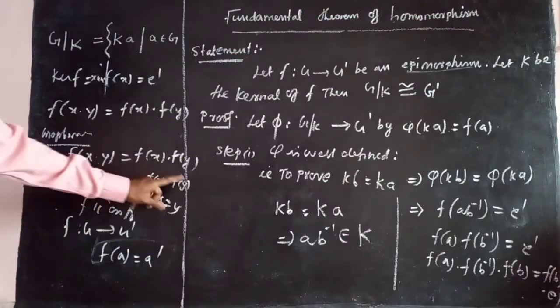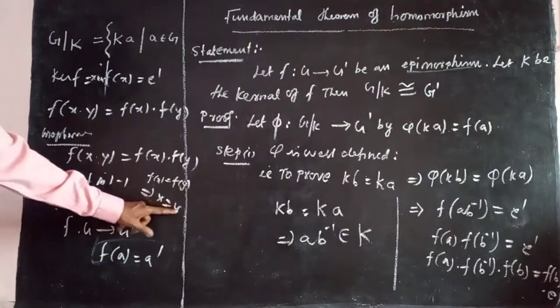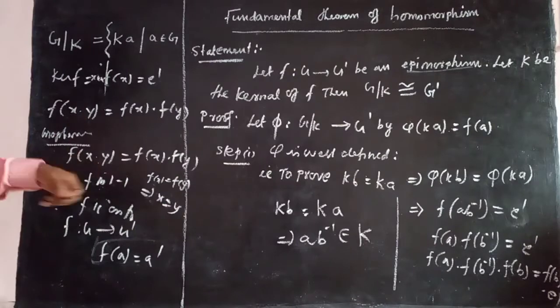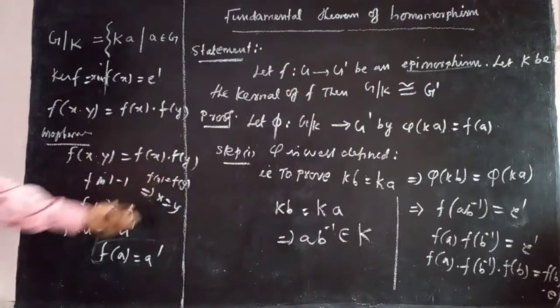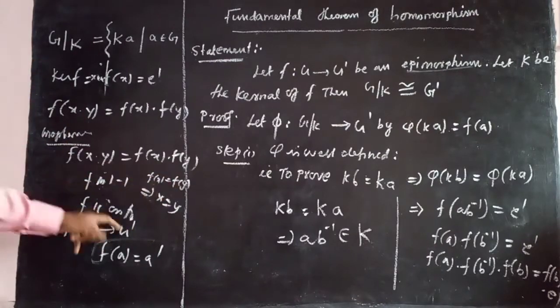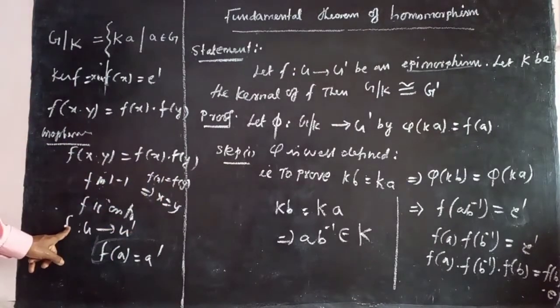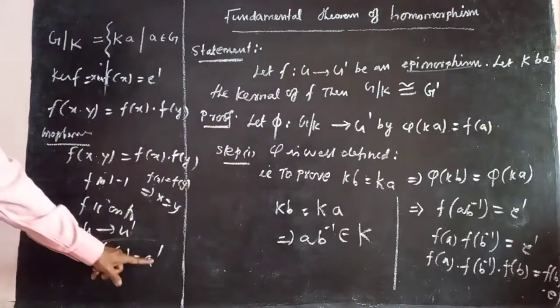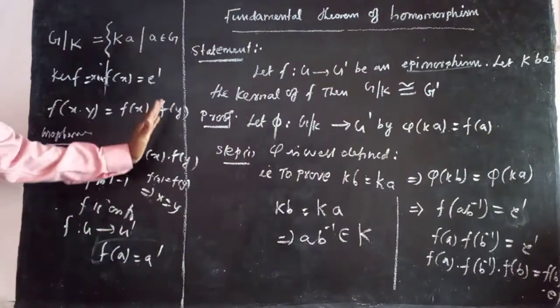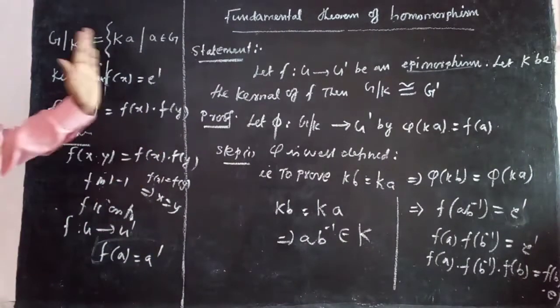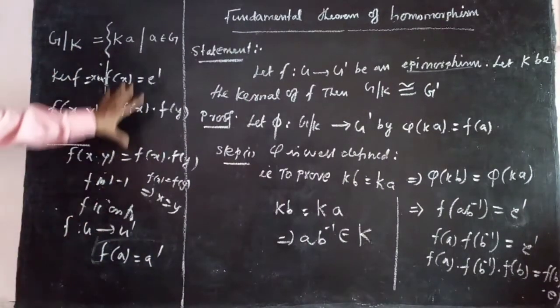Onto means: we take one element y in G', and there exists x such that F of x equals y — so y is in the image of F.